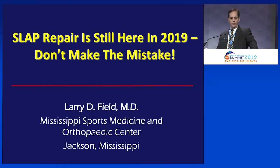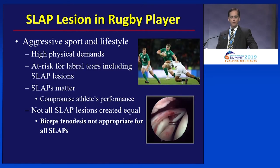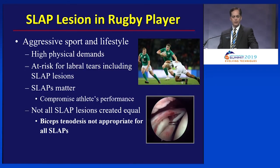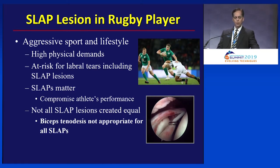Rugby is an aggressive sport with an aggressive lifestyle, and there are lots of physical demands required of it. SLAP lesions happen in these guys, but not all SLAP lesions are created equal, and biceps tenodesis is just not appropriate for all SLAPs.